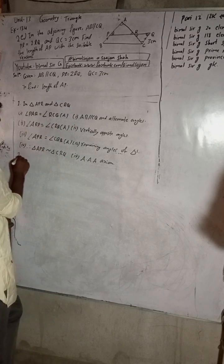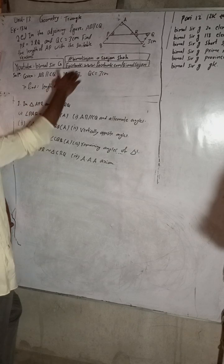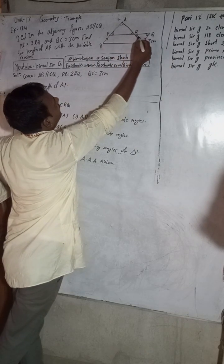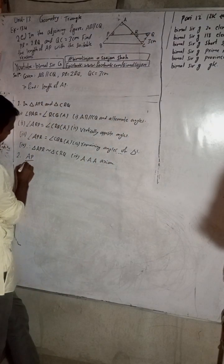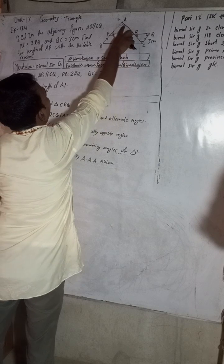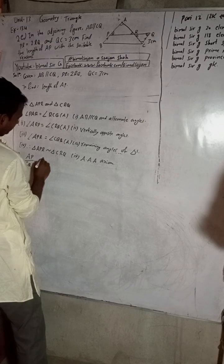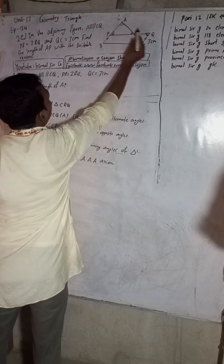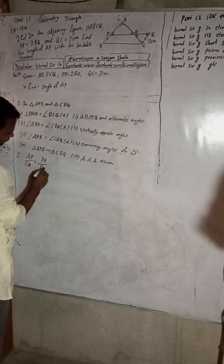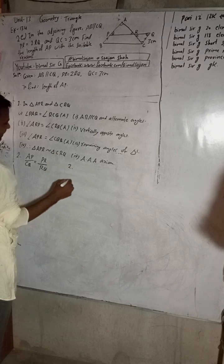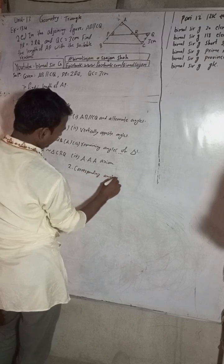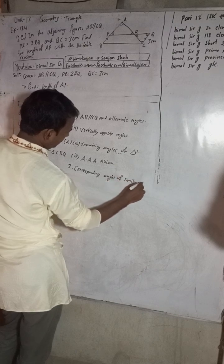Now we have to find the length of AP. AP corresponds to CQ, and PR corresponds to RQ. So we write: AP over CQ equals PR over RQ. The reason is that corresponding sides of similar triangles are proportional.